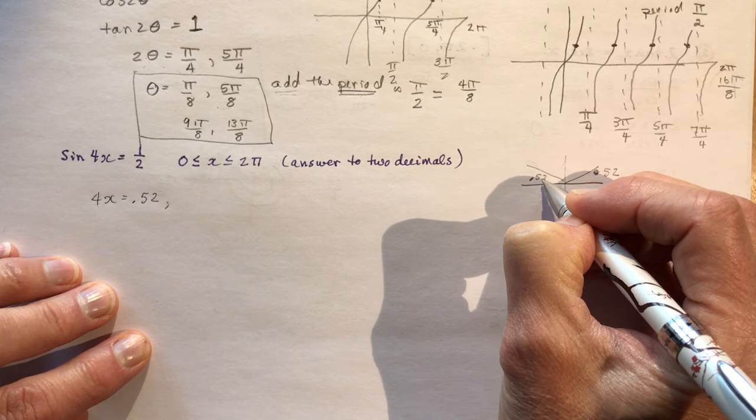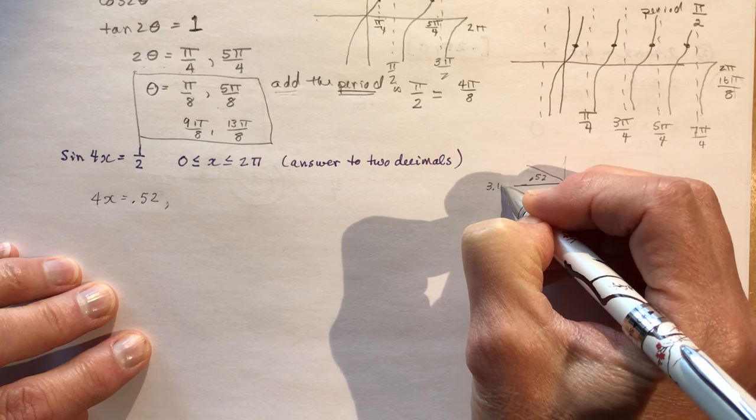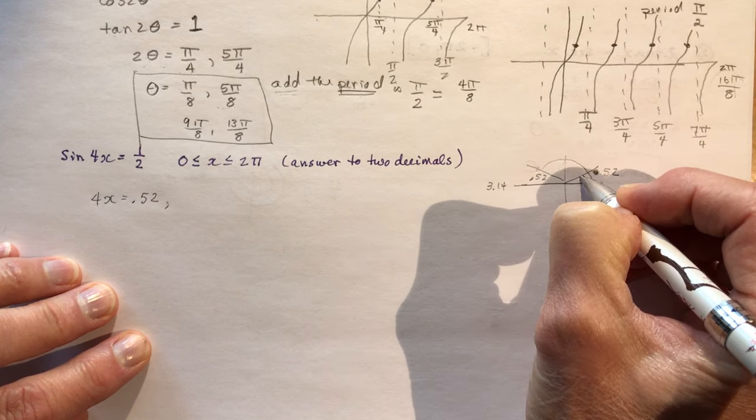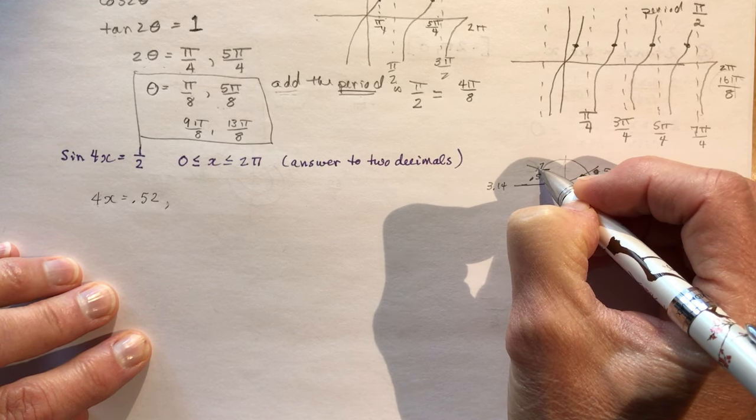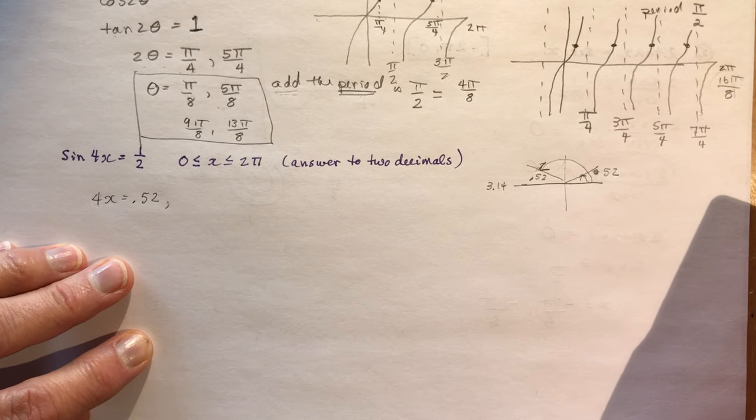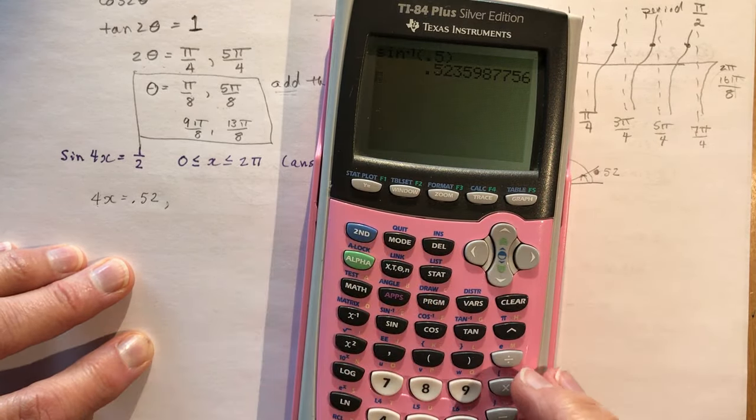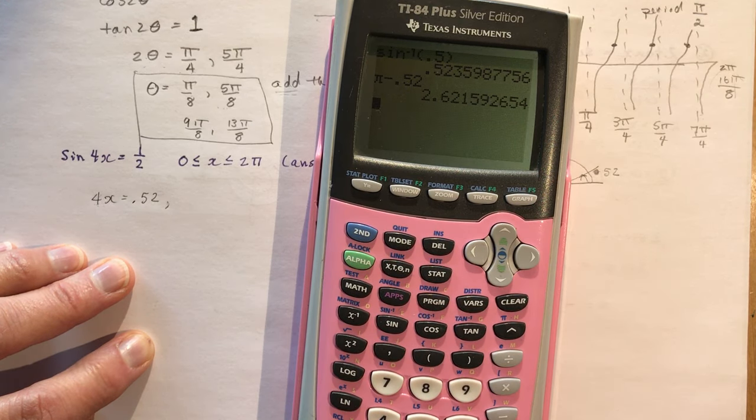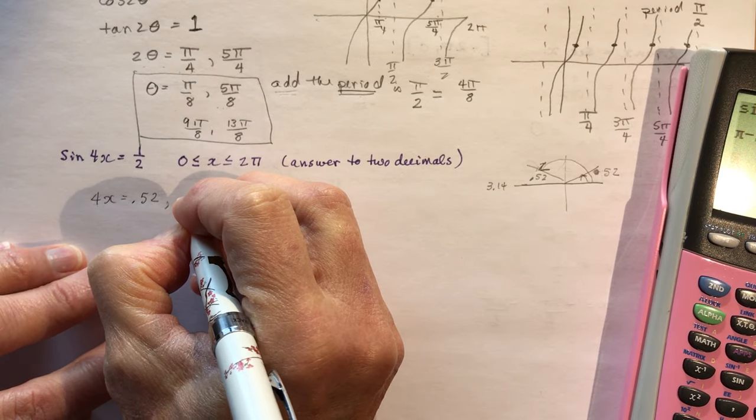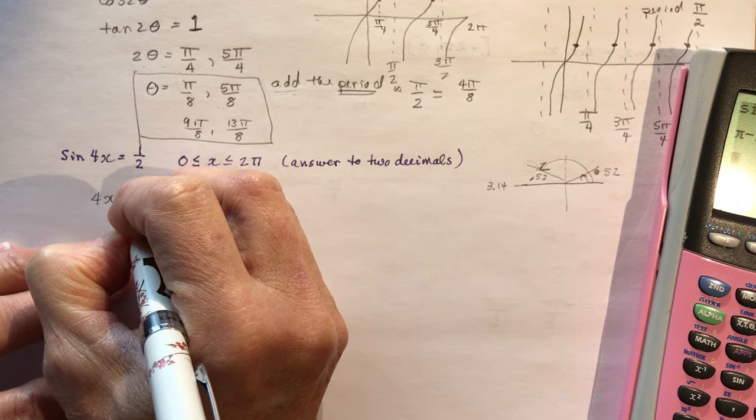So I'm going to do π minus 0.52. So I do π minus 0.52, and I get 2.62. 2.62. You should put a 0 first. It's nicer.